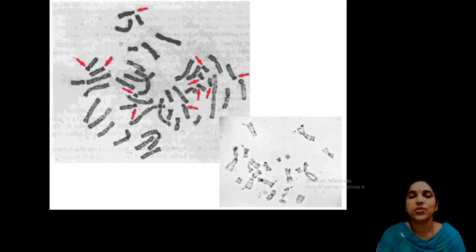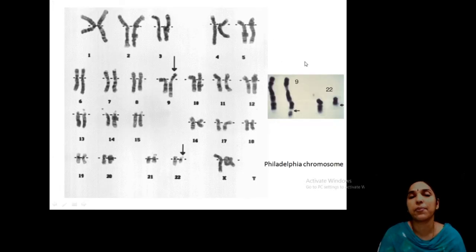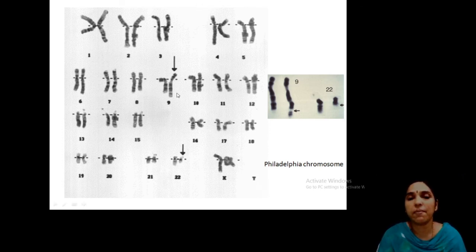From a microscope photograph, you can cut out chromosomes based on their size, pair them, and display them on paper. An important example is chromosome number 9, also known as the Philadelphia chromosome, which will be discussed further when studying isochromosomes.